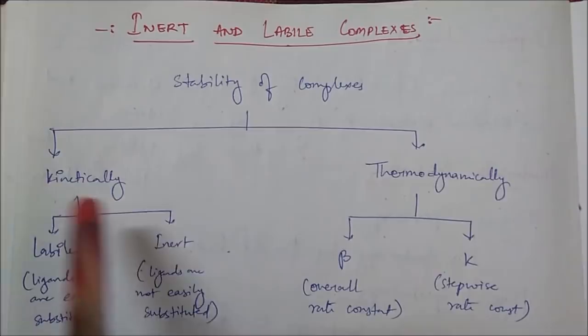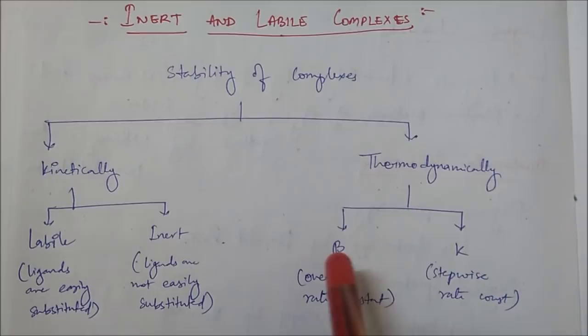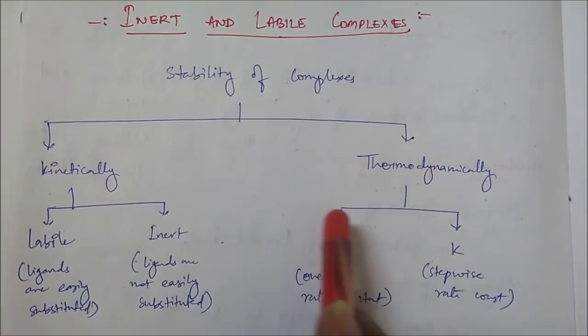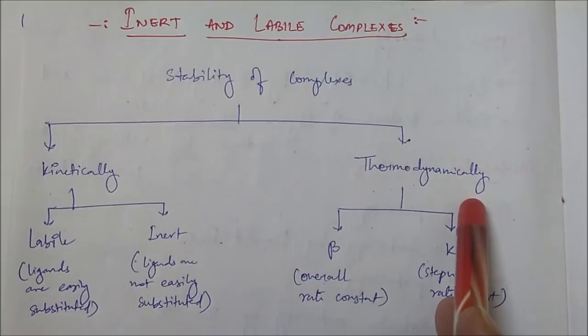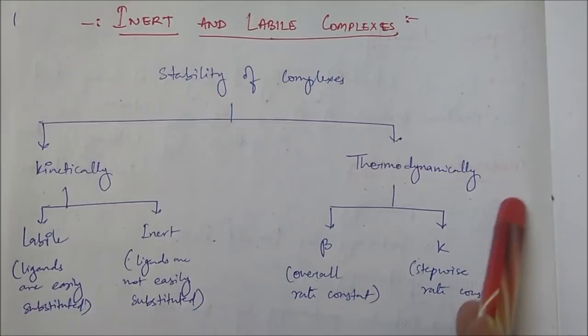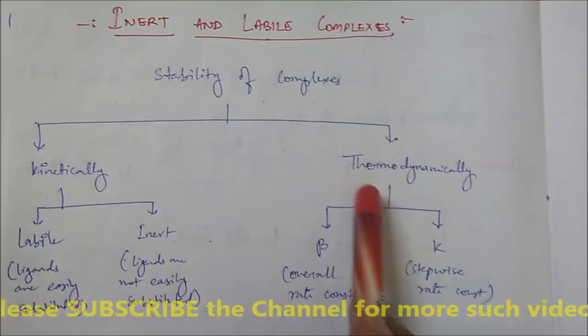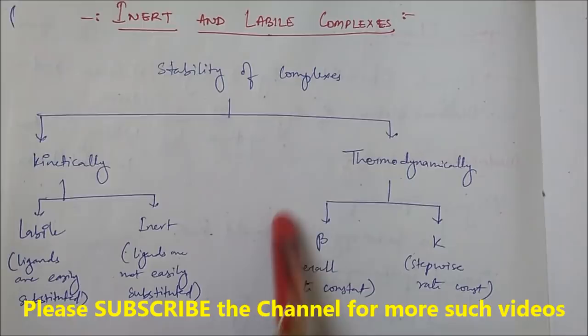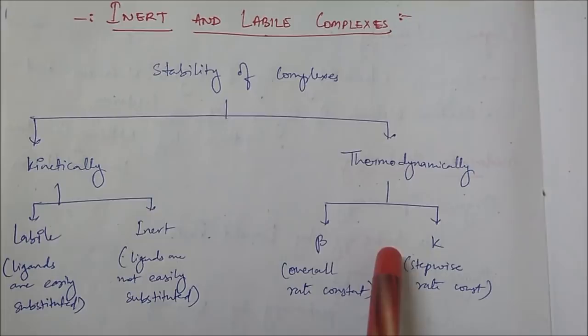Thermodynamic stability is measured in terms of beta and K. Beta gives your overall rate constant — for example, if you have an ML6 complex and heat it, it converts stepwise to ML5, ML4, ML3, and so on; beta is the overall rate constant from ML6 to, say, ML2. K is the stepwise rate constant for each individual step, such as ML6 to ML5 or ML5 to ML4. These are well-studied in inorganic chemistry at the master's level.